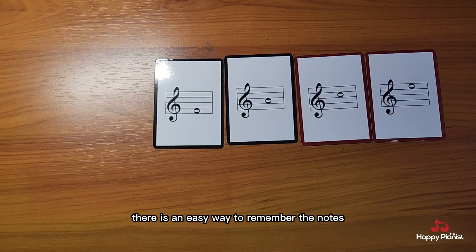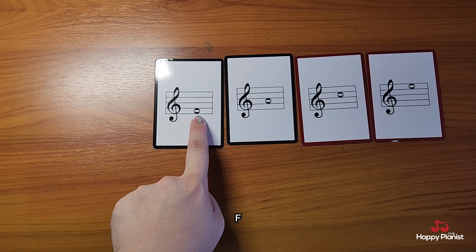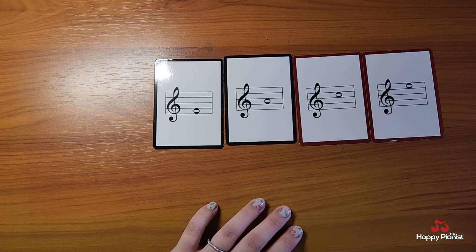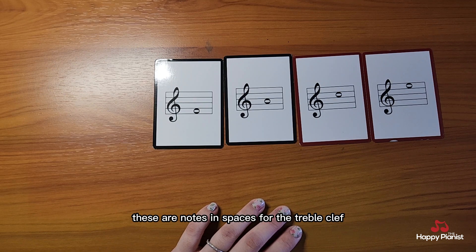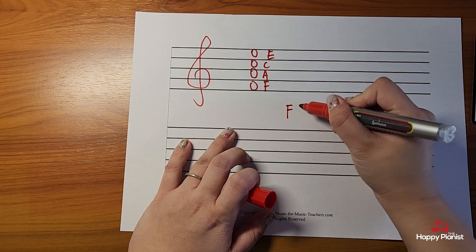There is an easy way to remember the notes. If the notes are in the spaces, F, A, C, E. These are notes in spaces for the treble clef. What does F, A, C, E spell out? Face.